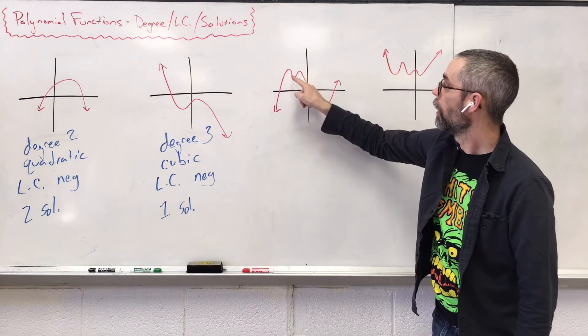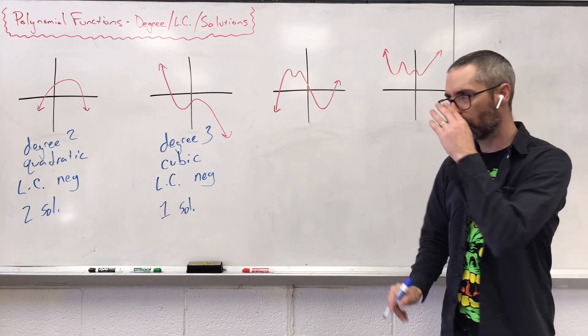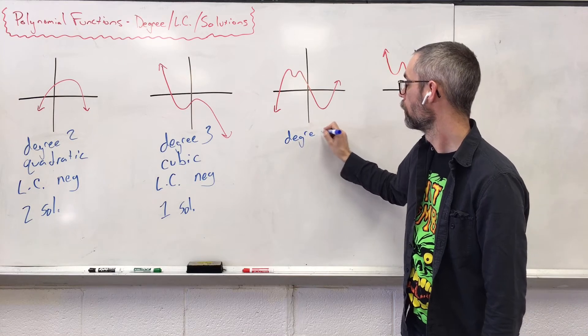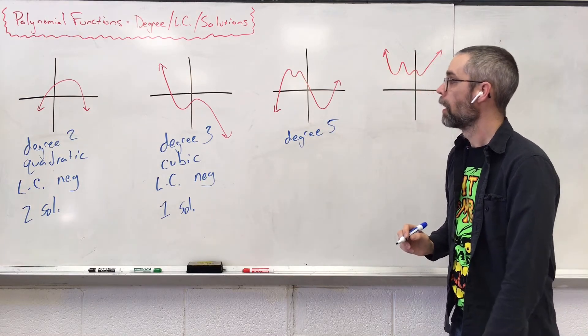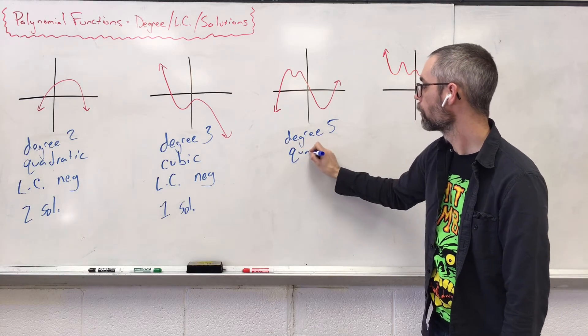Next one here, I have one, two, three, four turns in my graph. Four turns, meaning we're going to have a degree five. Degree five, we call quintic, special name.